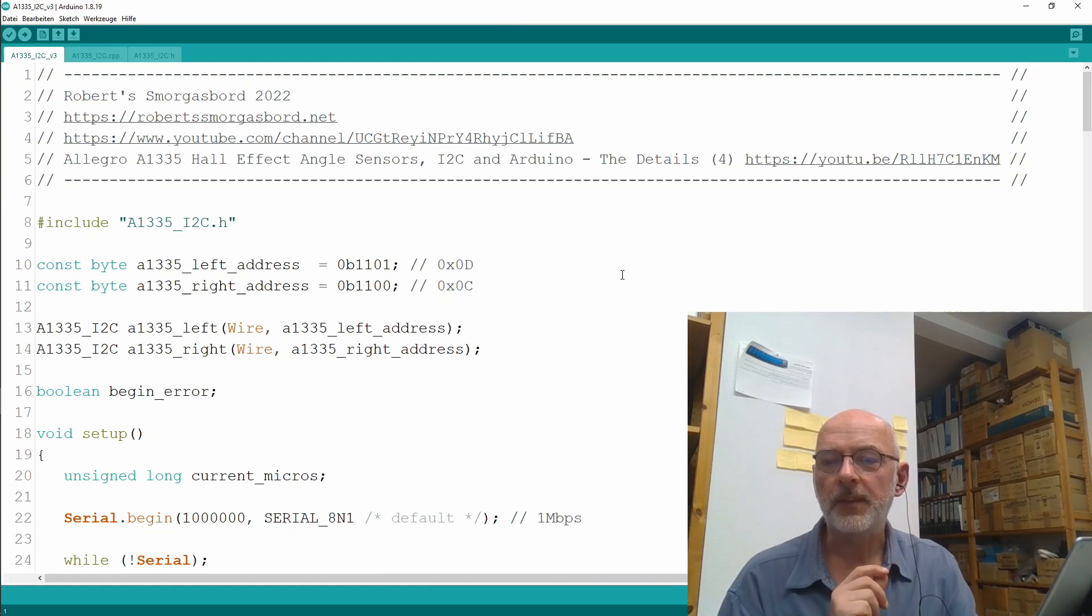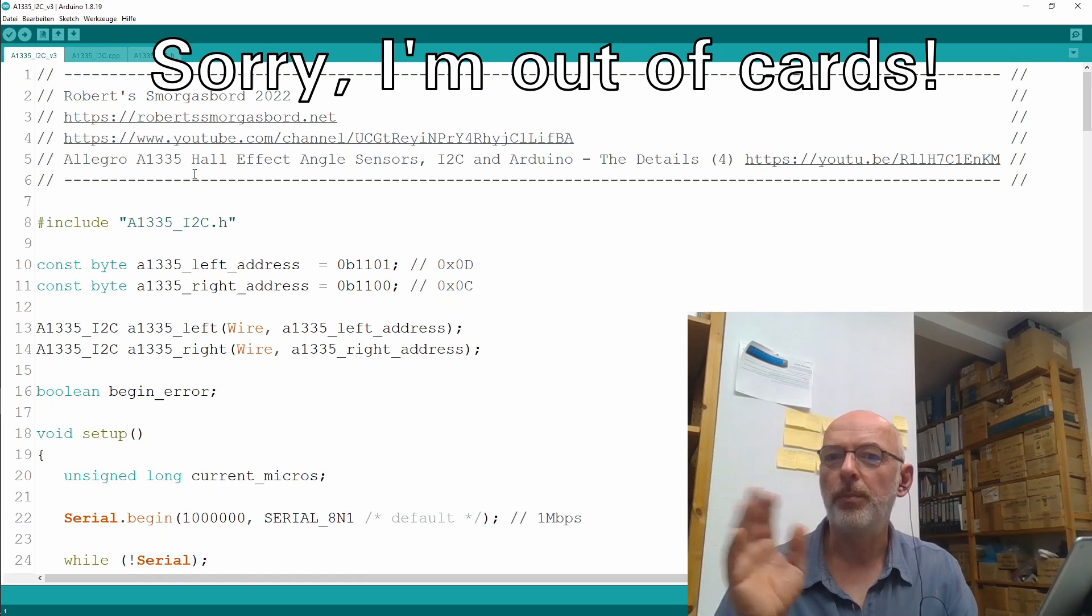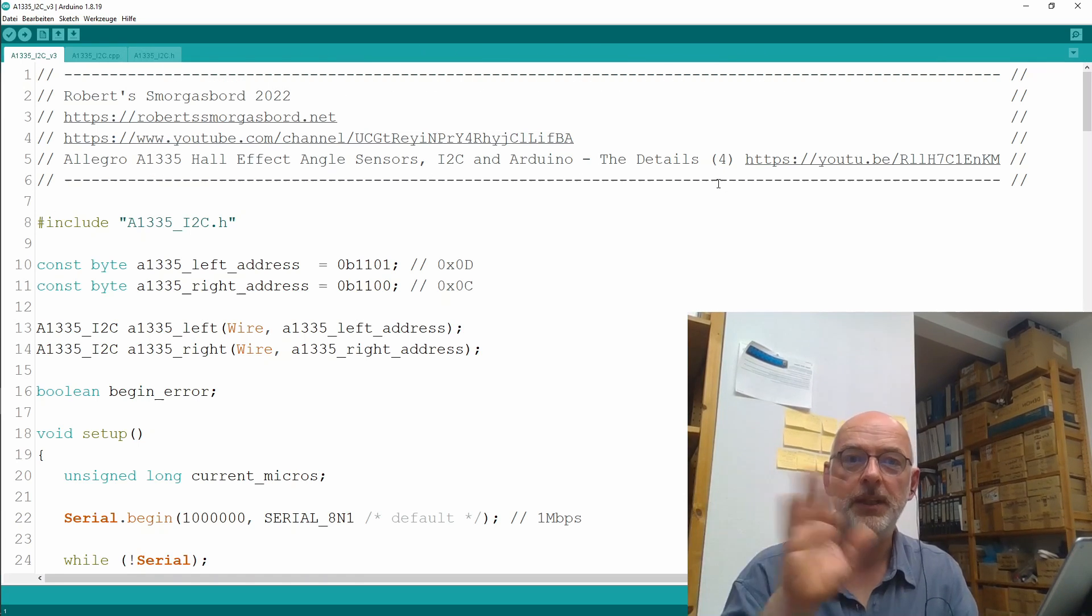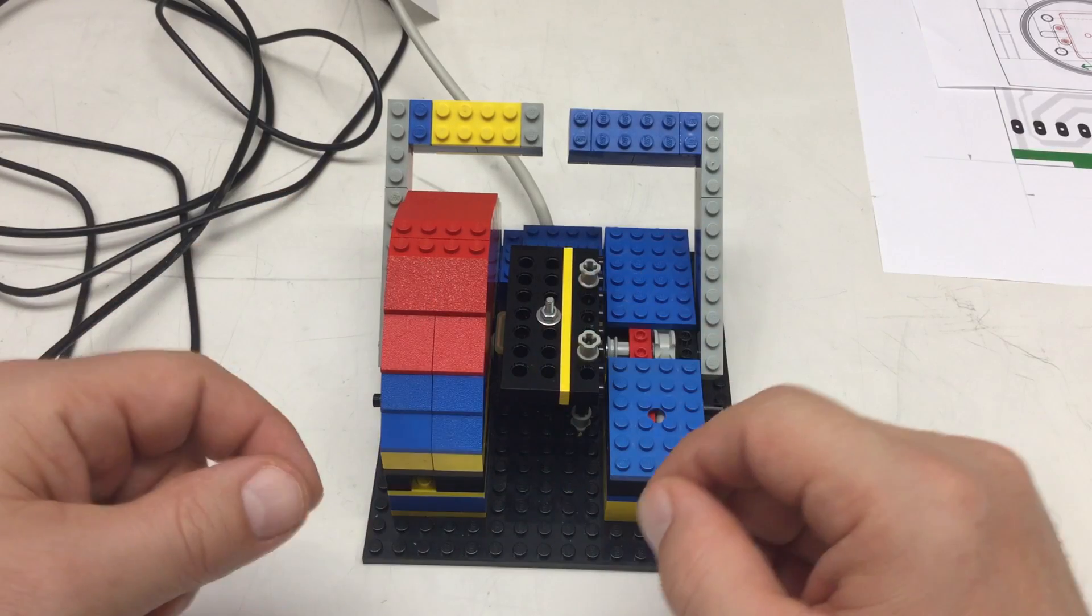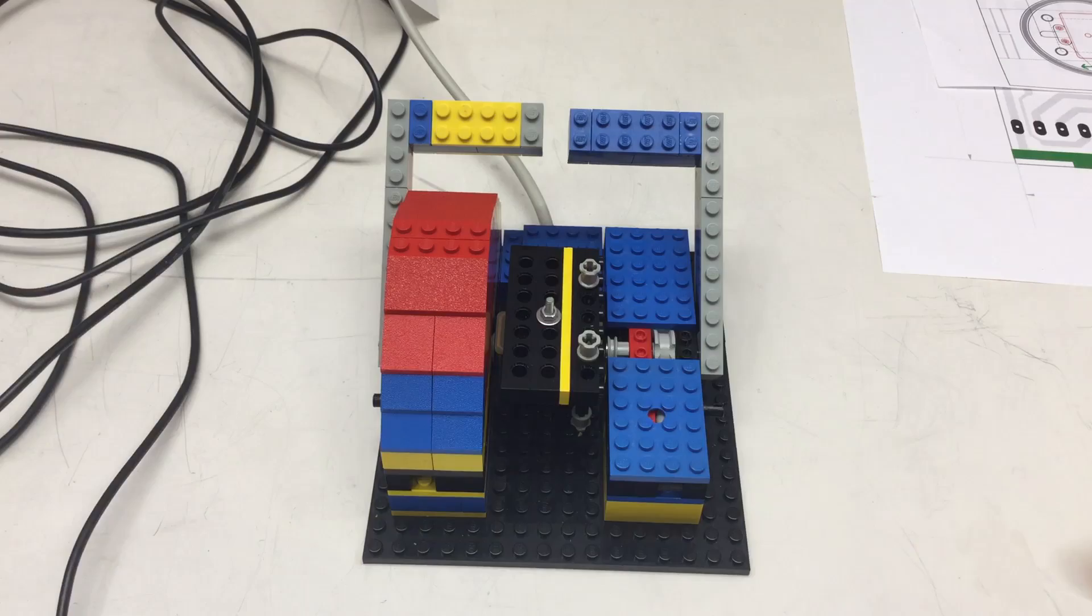To be exact, that was version three of my A1335 code, shown in part four of Allegro A1335. The details are in part four, card here, link in the description. That's it for today.